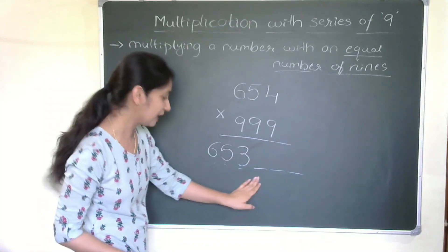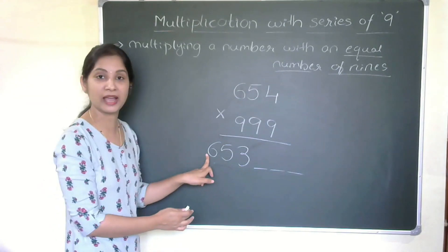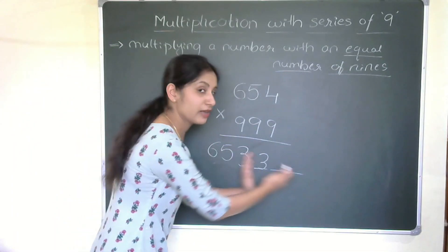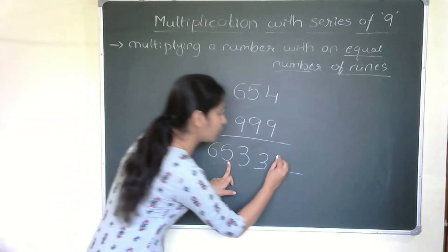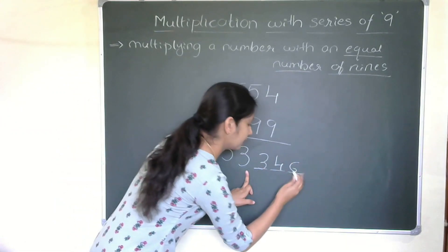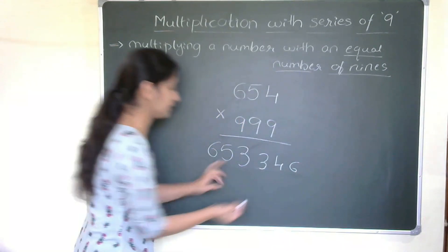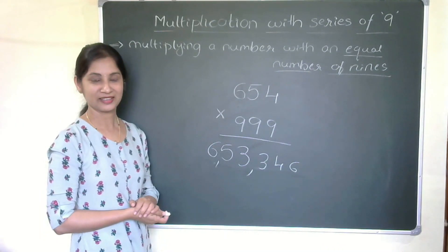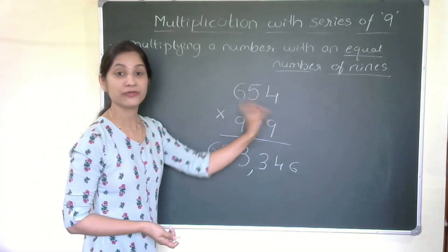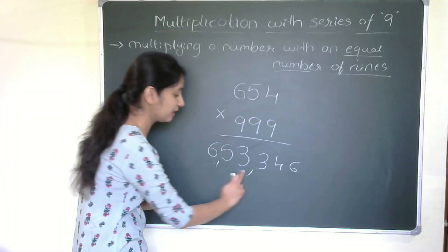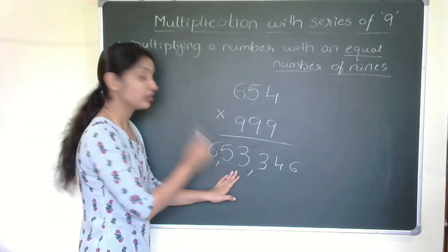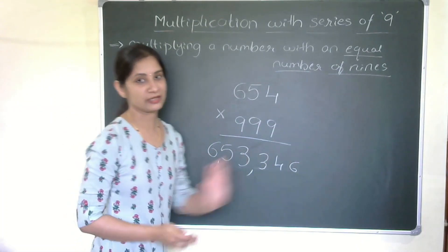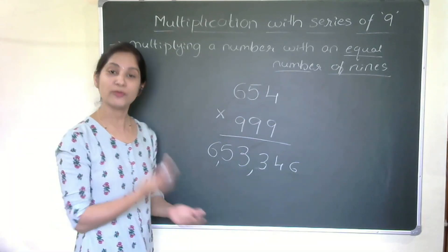For the right part, you deduct each digit of the original number from 9, going left to right: 9 minus 6 is 3, 9 minus 5 is 4, 9 minus 3 is 6. So the answer is 653346. Just two steps — deduct 1 from the number for the left part, then deduct each digit from 9 for the right part.